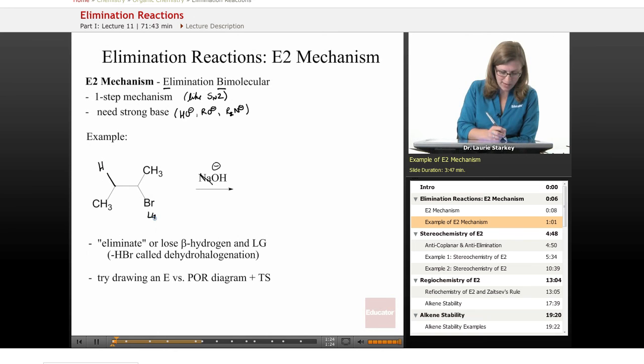It's not on the same carbon as the leaving group. Remember, the halide is going to behave as a leaving group just like it did in a substitution reaction. The hydrogen that gets attacked is not on the same carbon as the leaving group. It's the next carbon over. So we call this not the alpha position, but the beta. This is called a beta hydrogen.